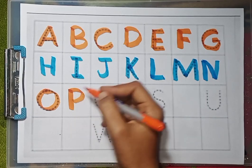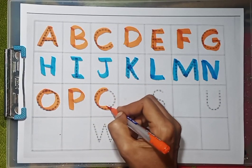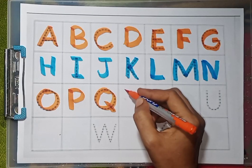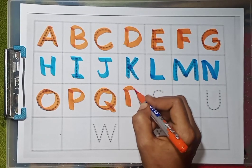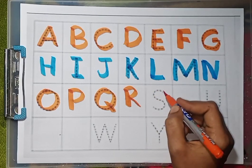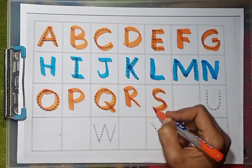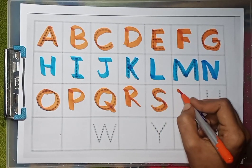P for pen, Q for queen, R for rabbit, S for sun.